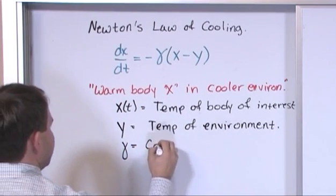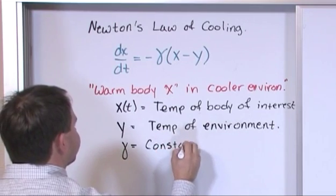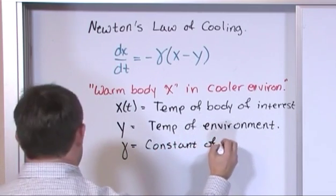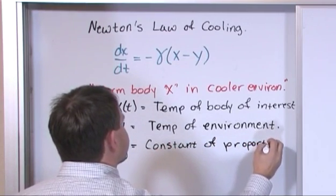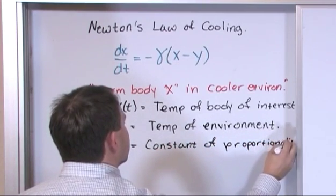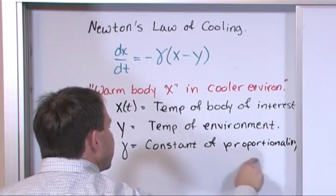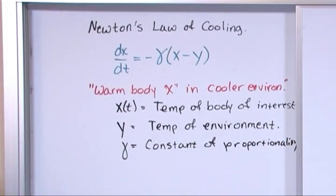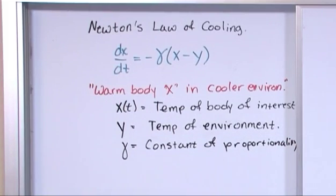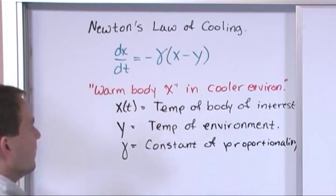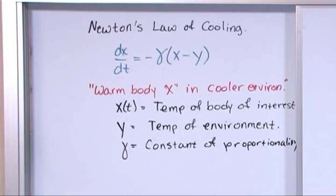Gamma is just a constant of proportionality. And I ran off the board a little bit, but it says constant of proportionality. And that just arises to make the equation hold. Experimentally, gamma is usually observed, if you were to actually set up an experiment like this.